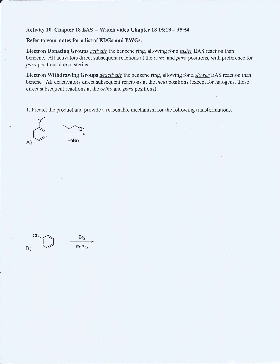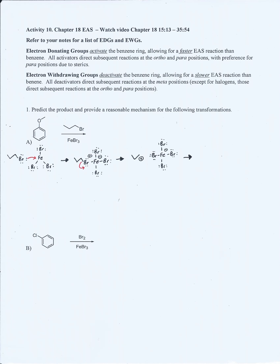My method is identifying and knowing what the reactant and the reagents do. For Part A, the reactant is a moderate activator, which means that the reaction will favor a para position. The reagents are a Friedel-Crafts alkylation. For Friedel-Crafts alkylation, we need to make the electrophile: the alkyl halide will attack the FeBr3 to make a carbocation and the FeBr4⁻.